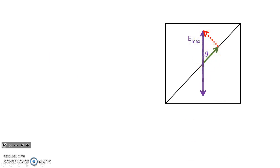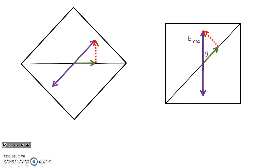We can take this picture and we can rotate the entire thing. And we still have the same fact. This green component is what passes through.